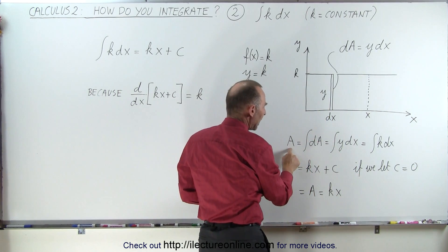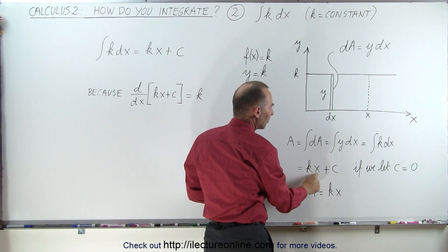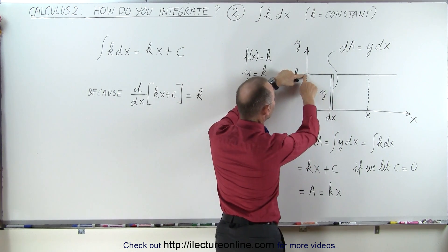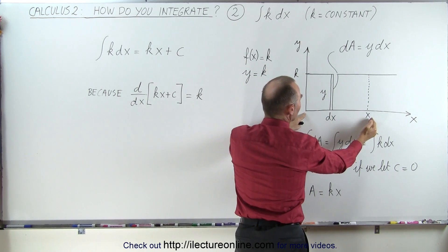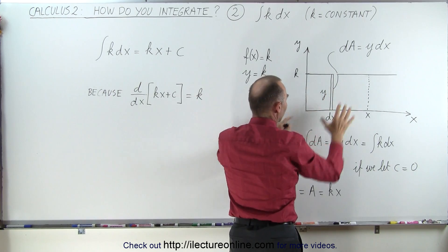But we can set that constant equal to zero. So that means that the integral for A, or the integral of dA, which is the area here, would simply be k times x. Now take a look here. k is the distance from there to there, and x is the distance from there to there. And notice how the product of those two do indeed represent that area.